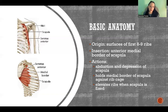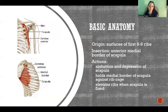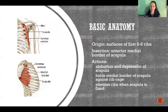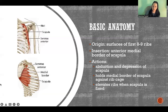Importantly, serratus anterior holds the medial border of the scapula onto the thorax — it anchors it onto the rib cage. You may have seen someone who has what we call winged scapulas, where the medial borders are pulling away from the thorax. If there's a visually apparent winging of the scapulas, that generally means serratus anterior is weak and requires strengthening, or it could be a nerve problem — damage to the nerve that supplies the muscle.